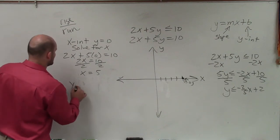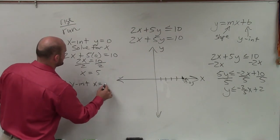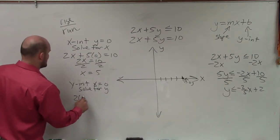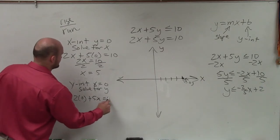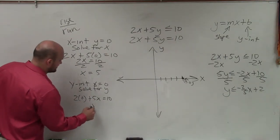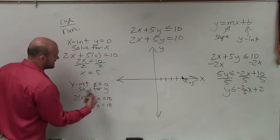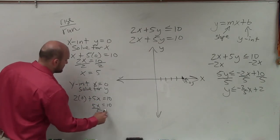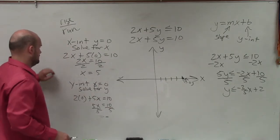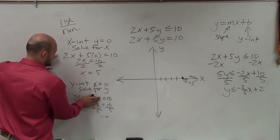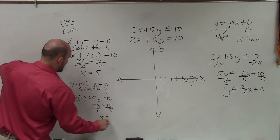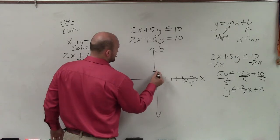To find the y-intercept, I set x equal to 0 and solve for y. So I have 2 times 0 plus 5y equals 10. We're just finding intercepts here, so we can use the equation rather than the inequality since we're not talking about shading yet. Dividing by 5, I get y equals 2, so I go up to 2 on the y-axis.